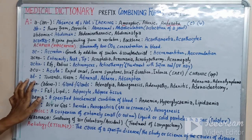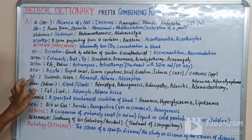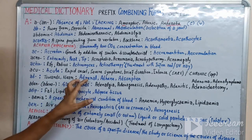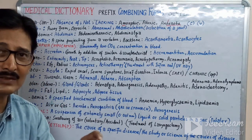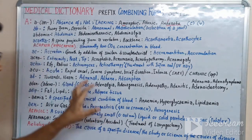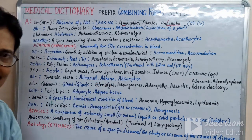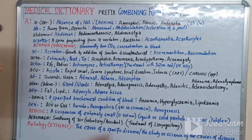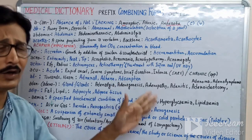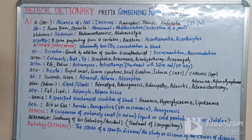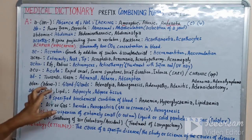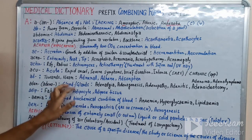The prefix 'ad-' means towards or near. For example, 'adrenal' is a gland located near the kidney. 'Adhering' also comes from 'ad-,' meaning sticking or absorbing onto something.